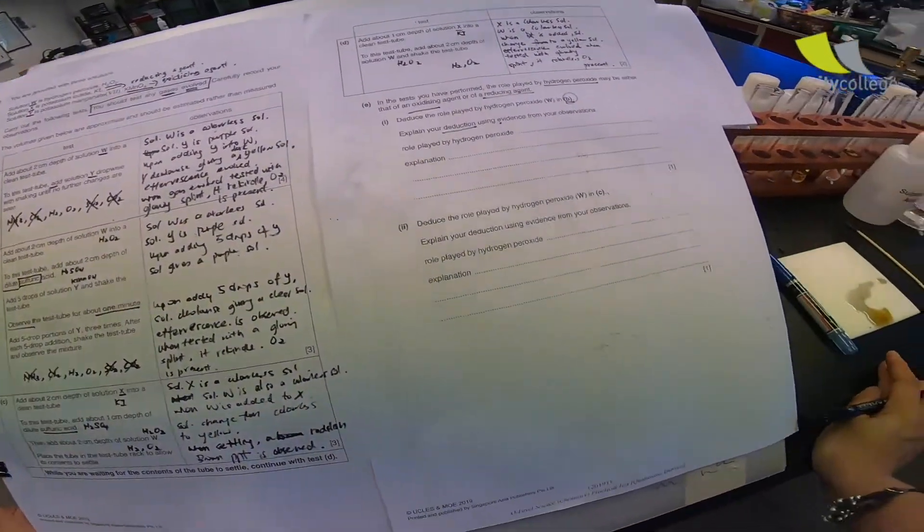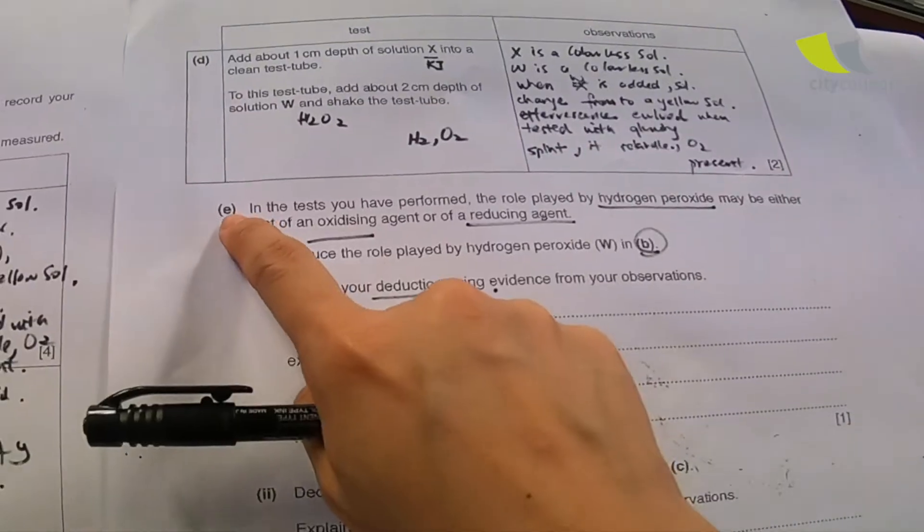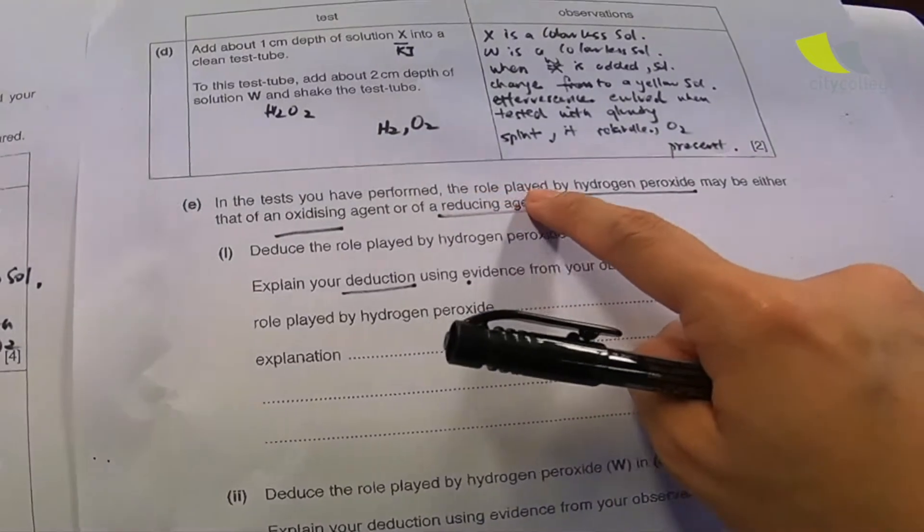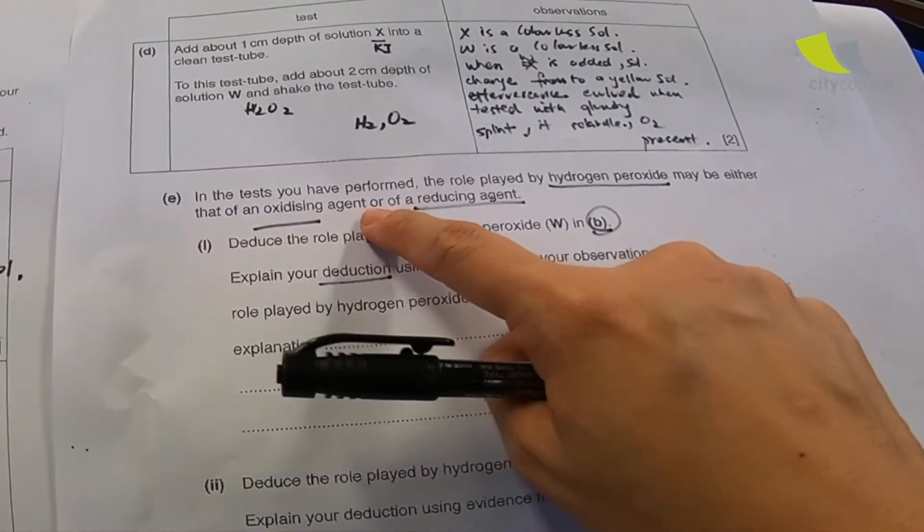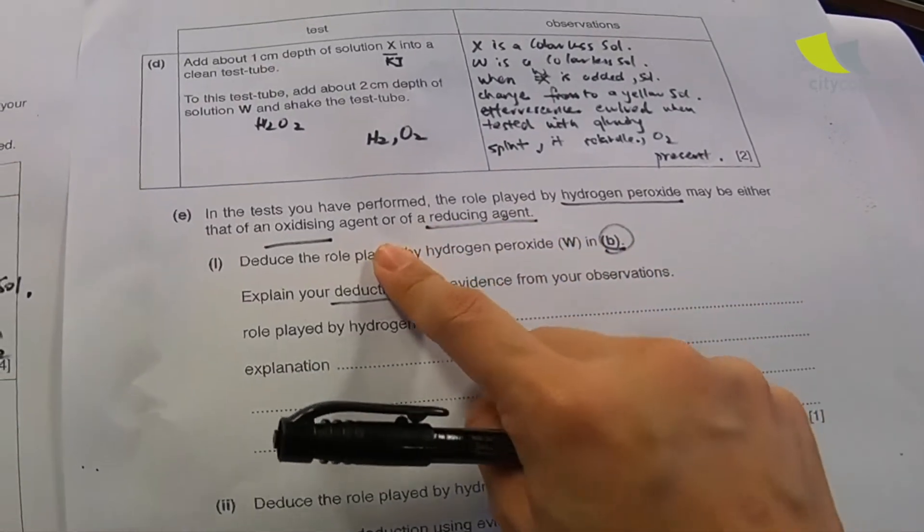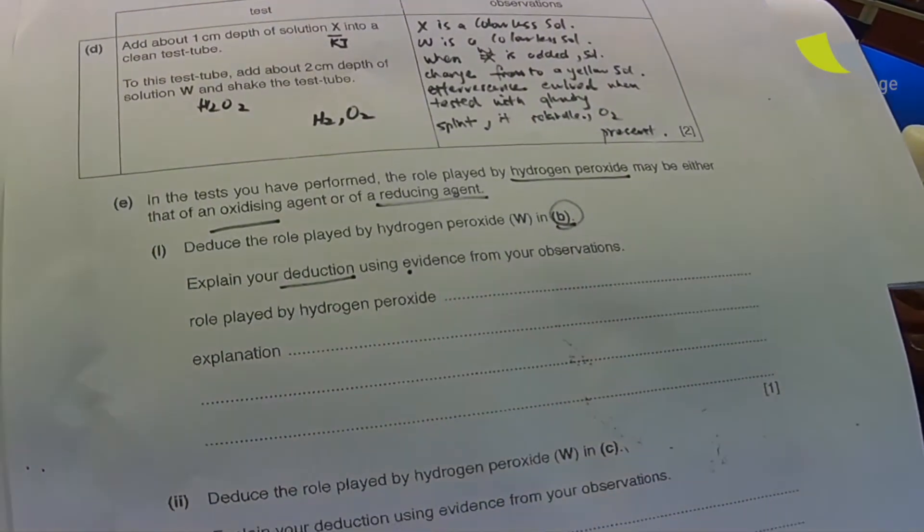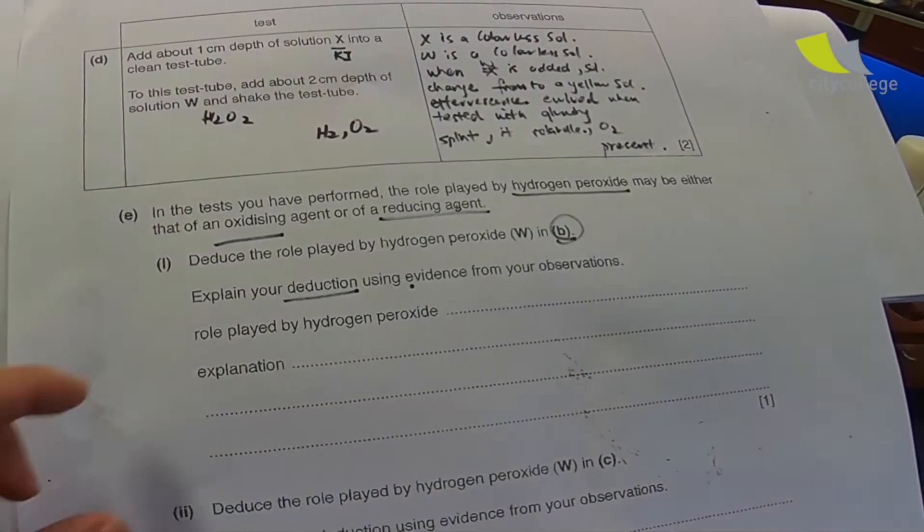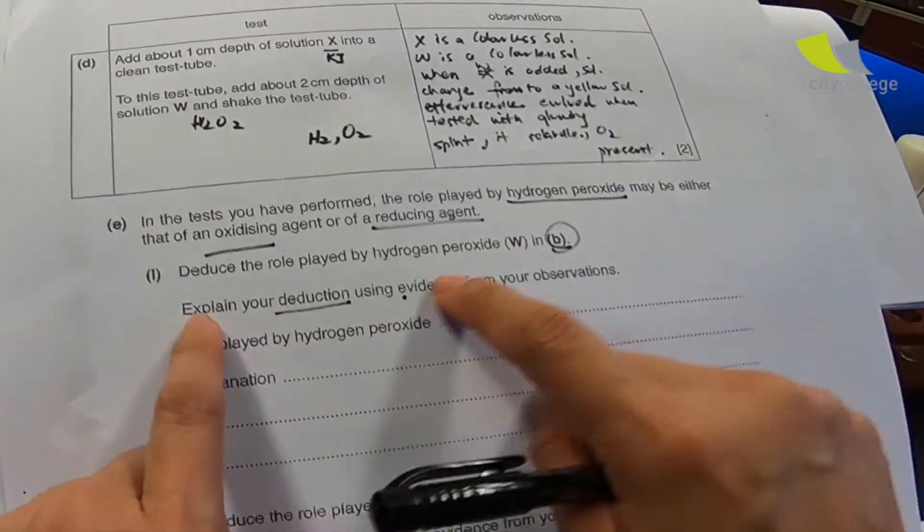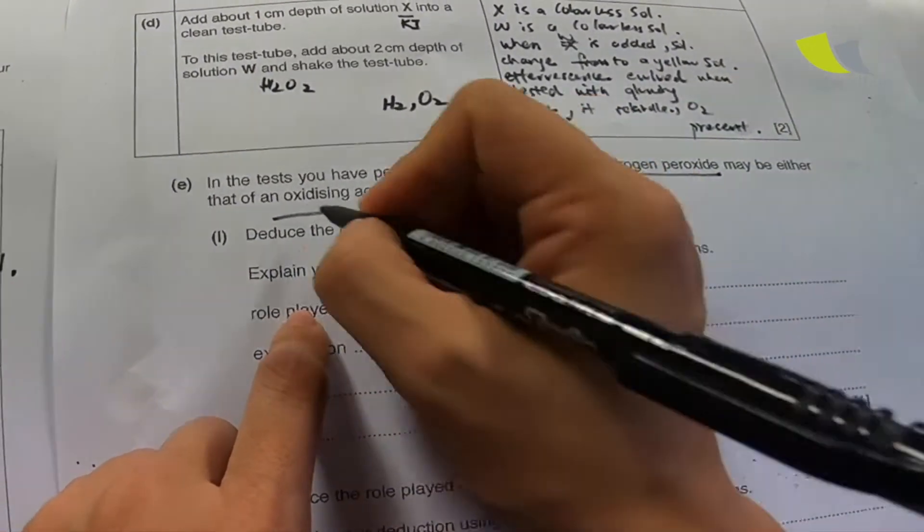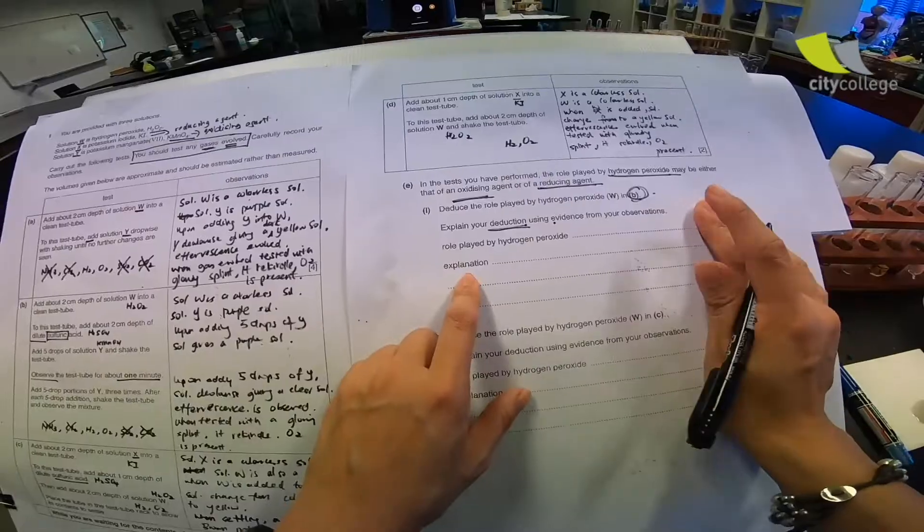Well, we have come to the last part, which is the conclusion portion, so let's begin. The question goes like this: In the test that you have performed, the role played by hydrogen peroxide may be either that of an oxidizing agent or that of a reducing agent. Let me further highlight this so that you all can see clearly.